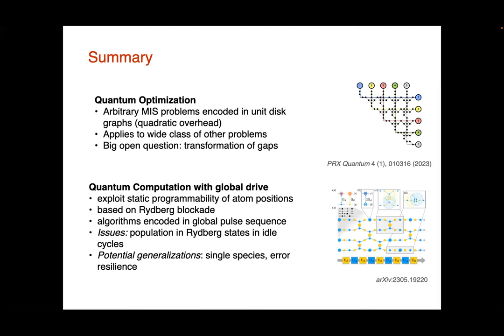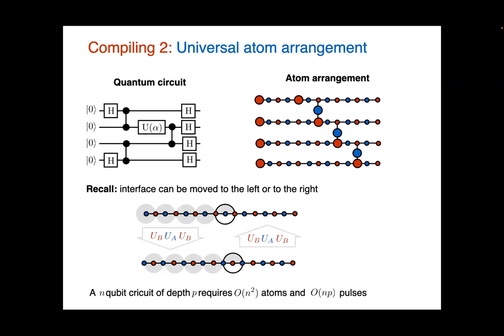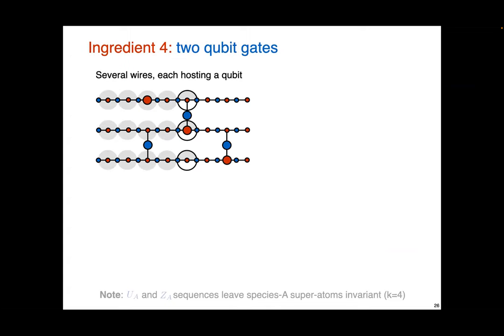We have time for a couple of questions. Audience question: You didn't actually discuss readout. Response: Readout is actually very simple. You can read out in the computational basis by just measuring in the ground-Rydberg basis — you know where your interface is, so you read it out. If the atom is in the ground state, it corresponds to the qubit being in the ground state; if in the Rydberg state, it's in the Rydberg state. It's a very simple readout. If you want to read out in a different basis, you would first apply a single-qubit rotation. Readout works exactly like in every other type of experiment.